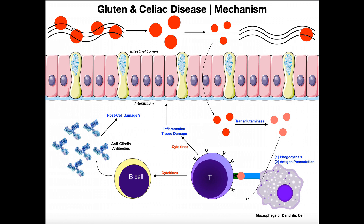With celiac disease, somebody is going to consume gluten — we have the strand-like glutenins and globular gliadin proteins. This gluten conglomerate is going to be broken down by a series of enzymes called proteases or peptidases. We have proteases in the stomach, the main one being pepsin, and in the small intestine things like trypsin, chymotrypsin, carboxypeptidases, and enteropeptidases. These enzymes basically bust up this conglomerate.